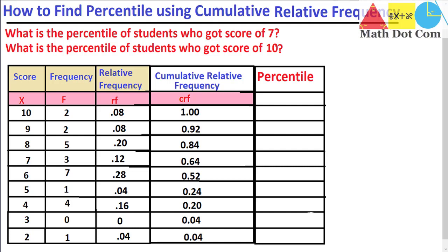Once you have that, the last column is the percentile column. In order to find the percentile you just need to use the cumulative relative frequency column — you have to convert the decimal form of the cumulative relative frequency into percentage form. You can do that by simply multiplying the cumulative relative frequency column by 100.